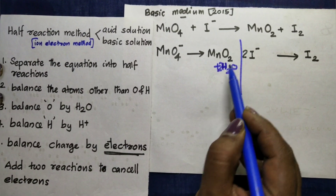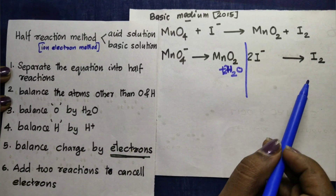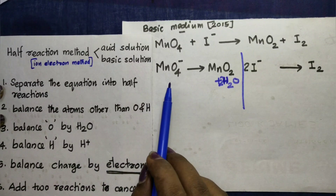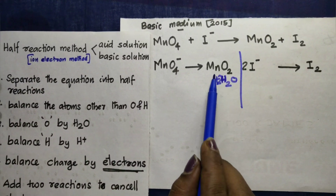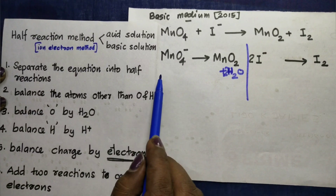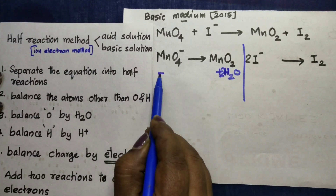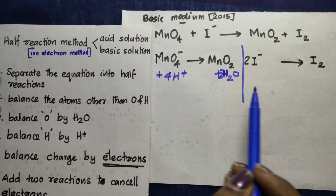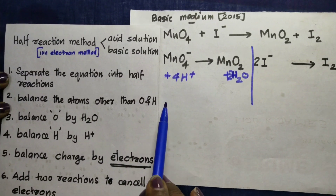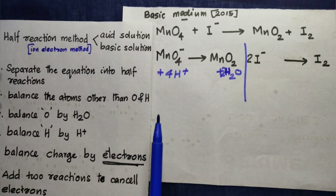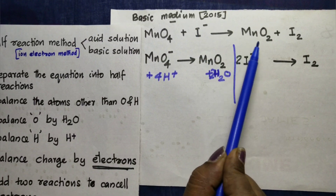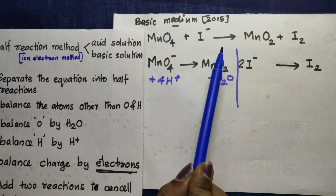That means how much oxygen — 1 oxygen, that means 2. Here 2 oxygen, so we will finish the next step. The second step is balance hydrogen by H₂O. We need to add hydrogen in this equation. We need to add 4 hydrogen on the opposite side: 4H⁺ equals H₂O plus 4H₂O. Balancing — reactant and product must have the same number of atoms.